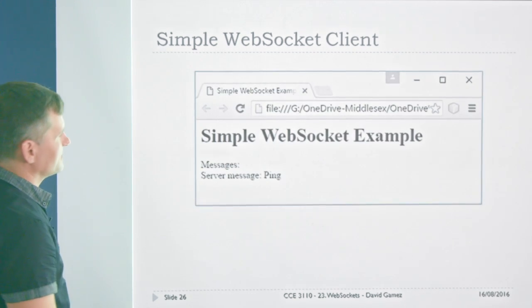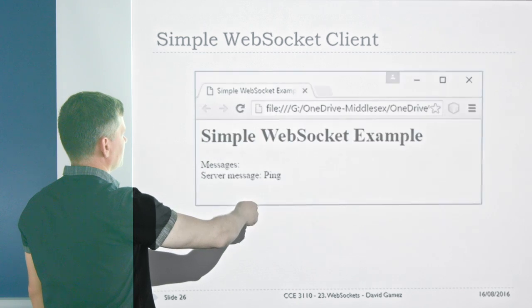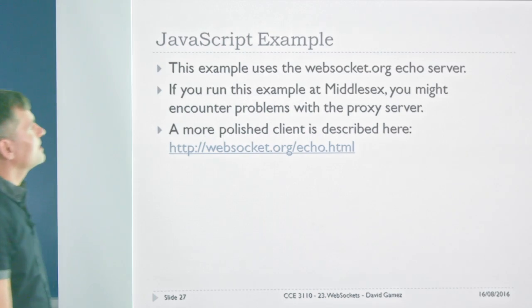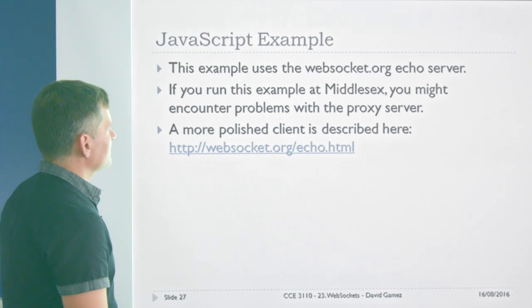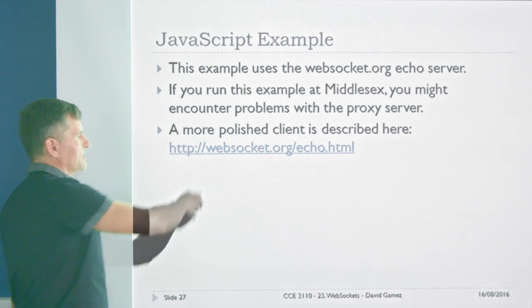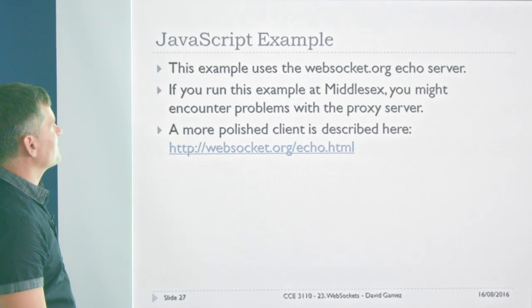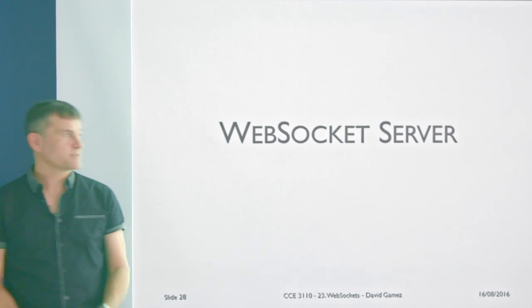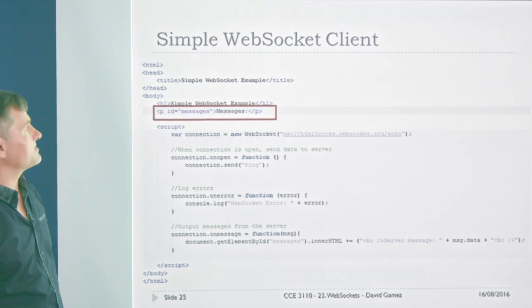This example shows the cross-origin stuff works because I can run this locally and it connects to a URL from an echo server example on another site. It's handling the different events generated by the WebSocket connection, and when you execute it, it connects to the WebSocket, sends the message, and you get the reply from the server. So that's very roughly how the client side works — just a few lines of JavaScript and there's your WebSocket up and running.